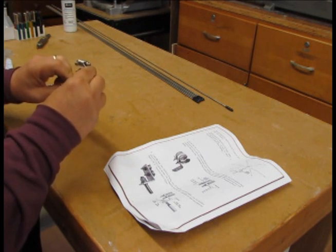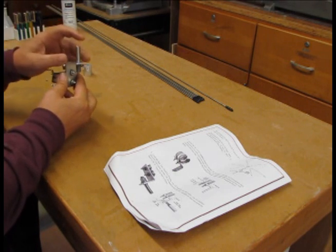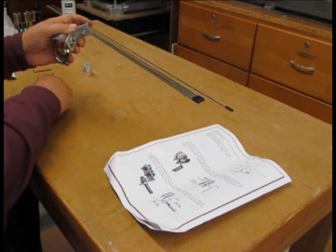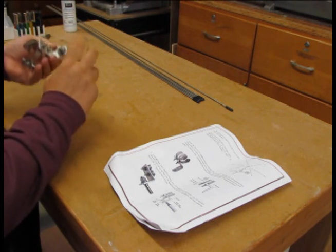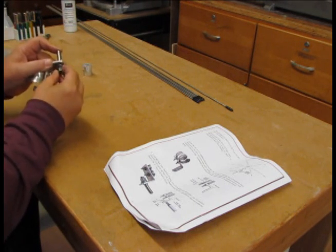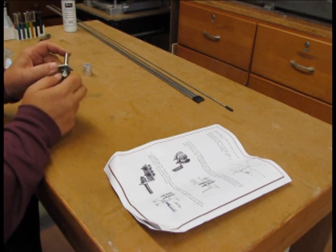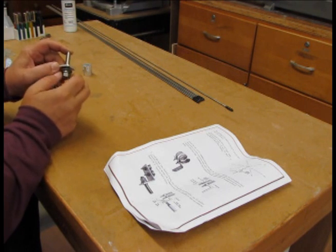And now we'll assemble it by putting the post through followed by a flat washer, a split washer, and the nut itself. So we'll tighten all that up.